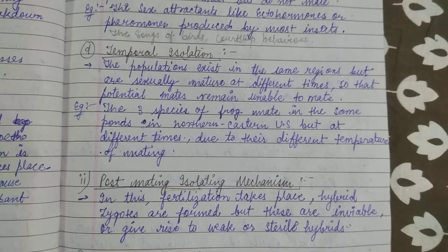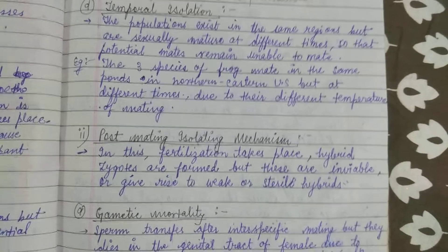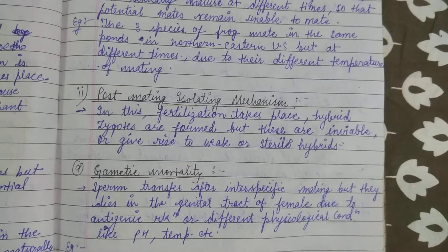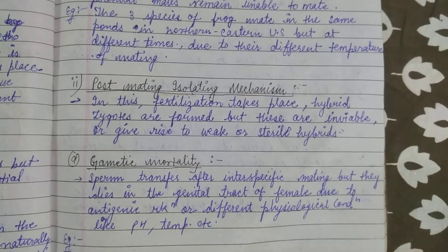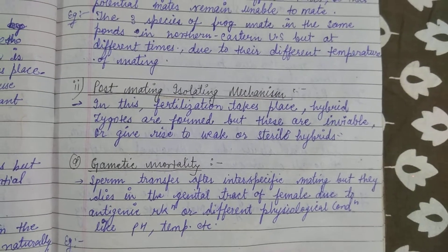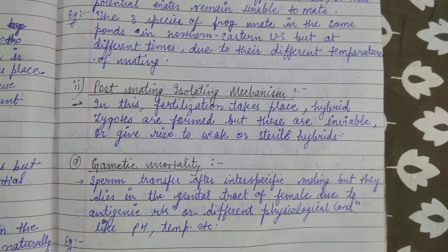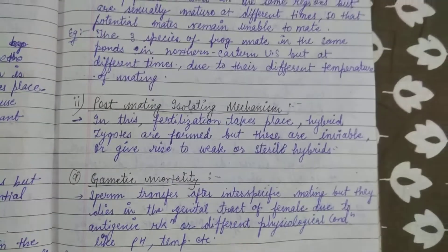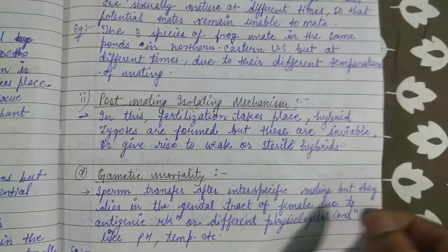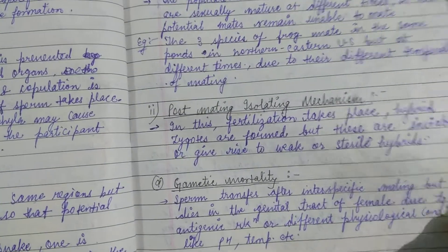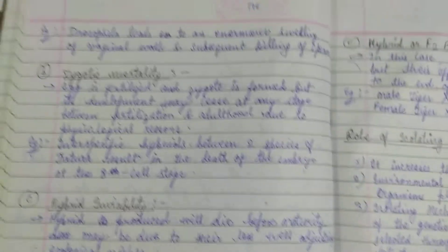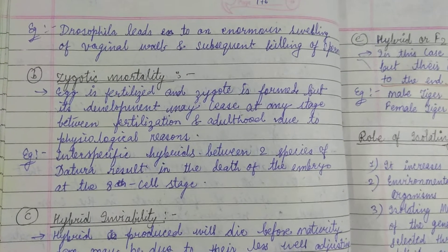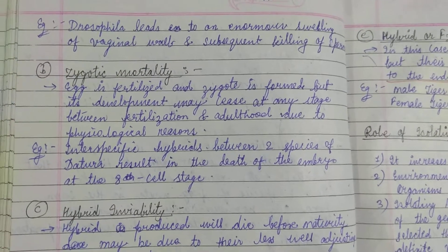In post-mating isolation, in gametic mortality, sperm is transferred during inter-specific mating but it dies in the genital tract of the female due to an antigenic reaction or different physiological conditions like pH or temperature. For example, in Drosophila, inter-specific mating leads to enormous swelling of the vaginal walls and subsequent killing of sperms.